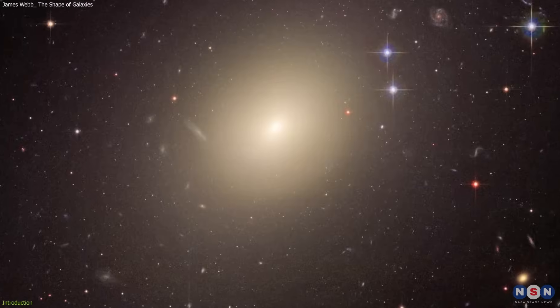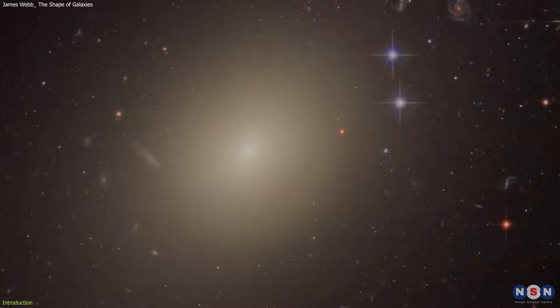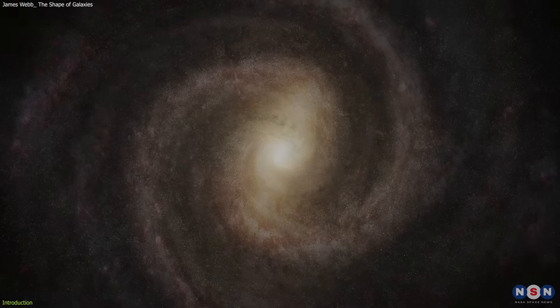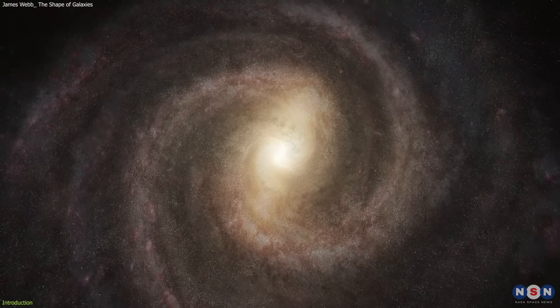Some galaxies are elliptical, like giant balls of stars. Some are irregular, like blobs of gas and dust. And some are spiral, like pinwheels with arms and discs.